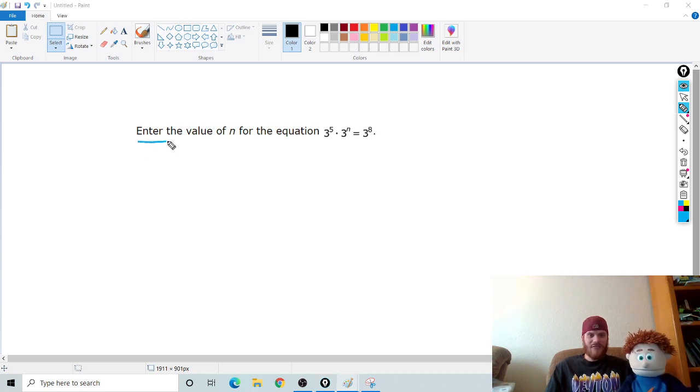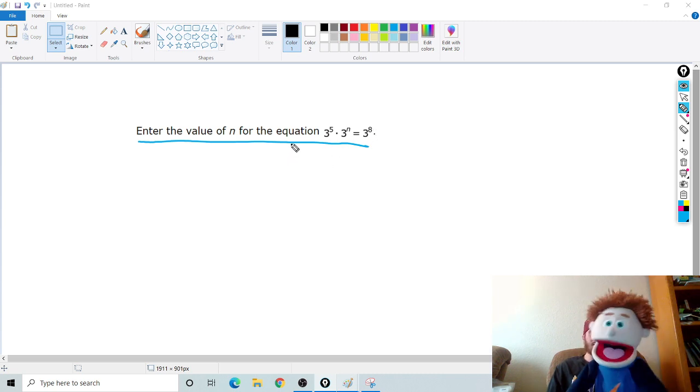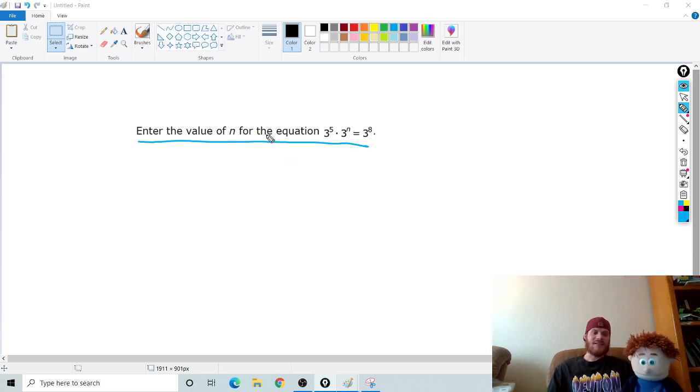Here's the first one. Enter the value of n for the equation. 3 to the 5th power times 3 to the n power equals 3 to the 8th power. What? I don't understand. So you just want us to know what's n that makes this thing true. So if I have 3^5 times 3^n equals 3^8, what in the world is n?